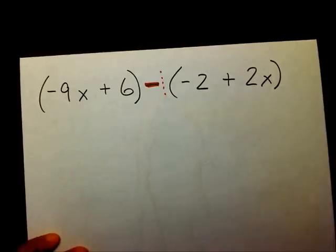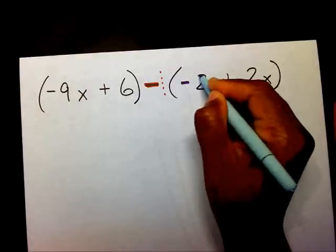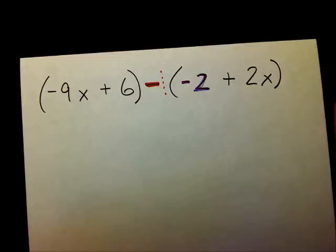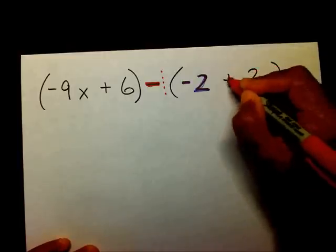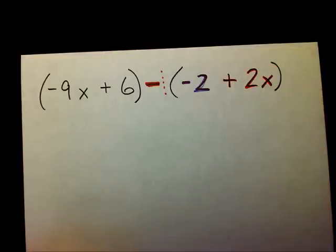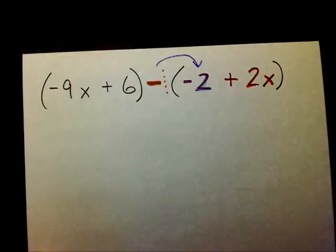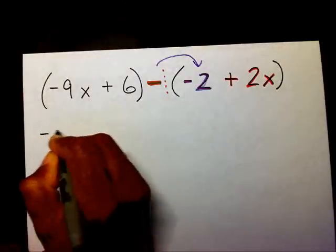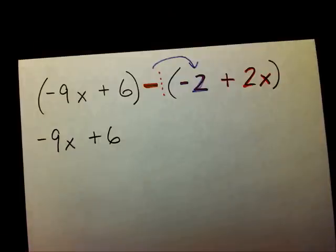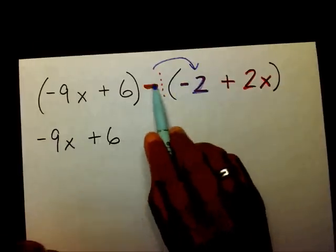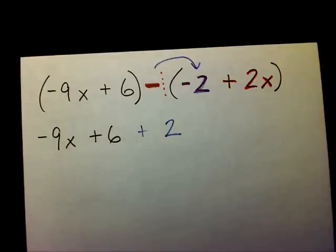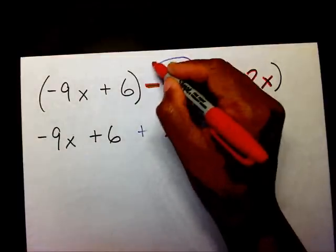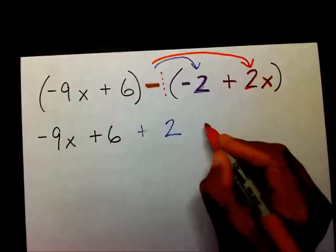When we're subtracting, we want to write a negative 1 here, and we're going to distribute it to the minus 2 and to the plus 2x. So before that I need to bring down negative 9x plus 6. Now, when I multiply the negative 1 times a negative 2 — a negative times a negative is a positive — that gives me a positive 2. When I multiply the negative 1 times the positive 2x, that leaves me with a negative 2x.